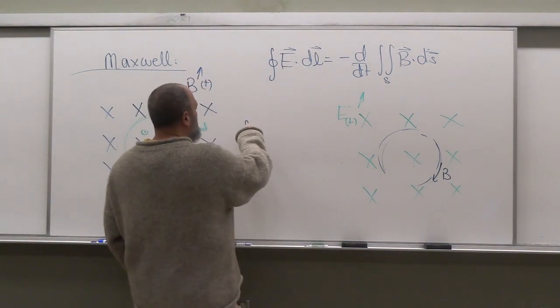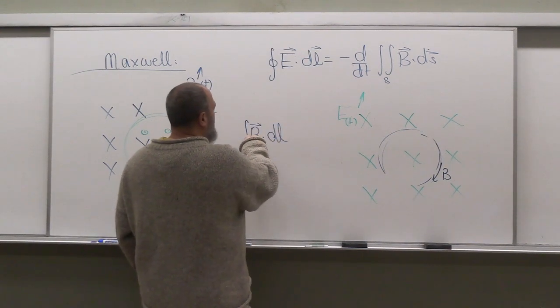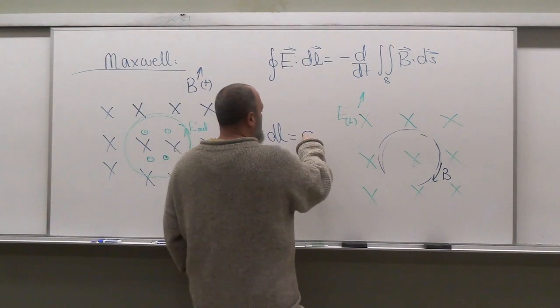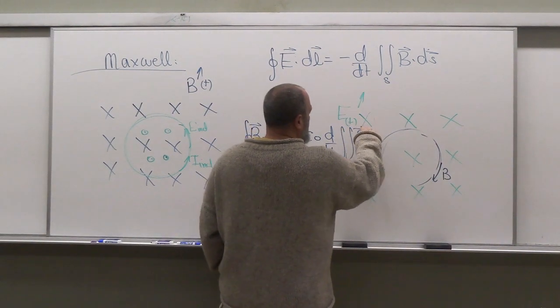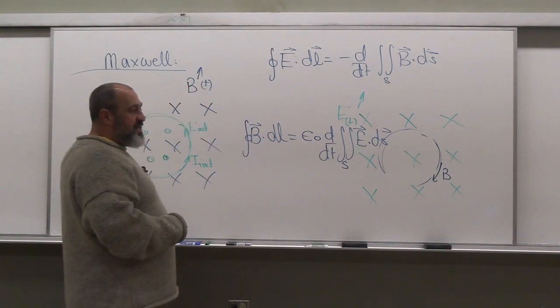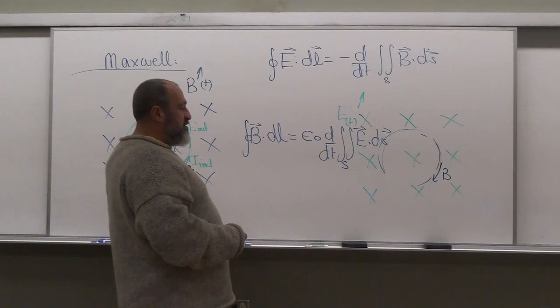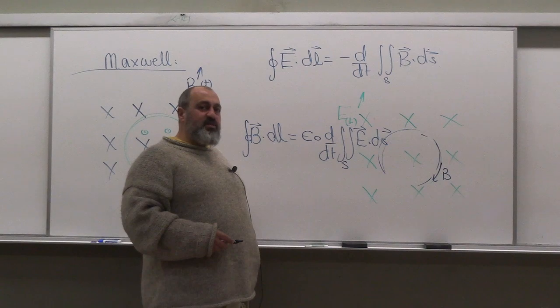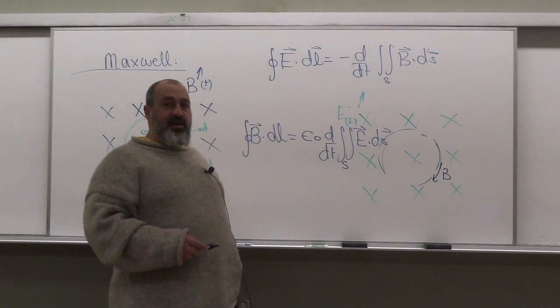So what he said now was that the integral of B dot dL on the closed loop has another component to it, and that is epsilon naught d by dt of double integral E dot dS on the surface. This is the second part of Ampere's law. The first part you know as mu naught double integral J dS. So this is talking about the displacement current now, and this is Maxwell's major contribution to complete Maxwell's equations.